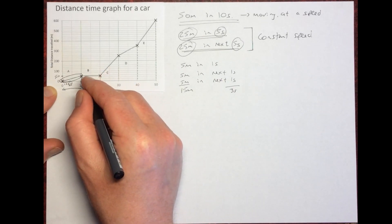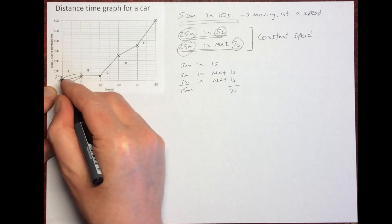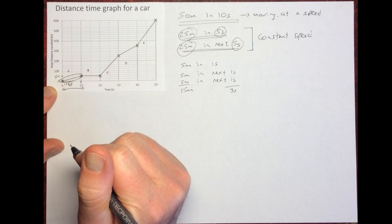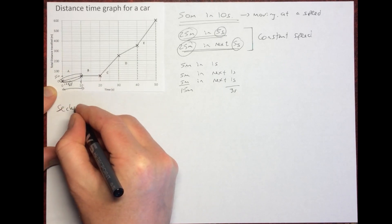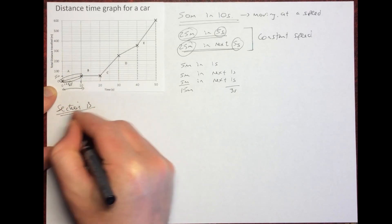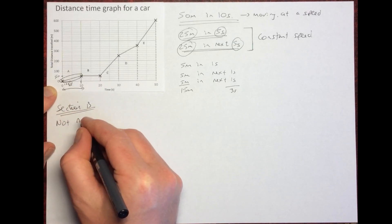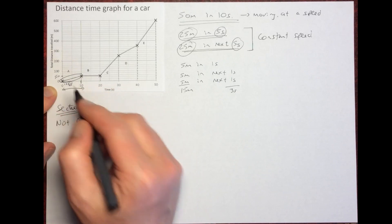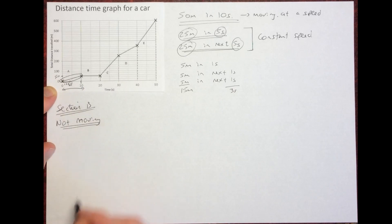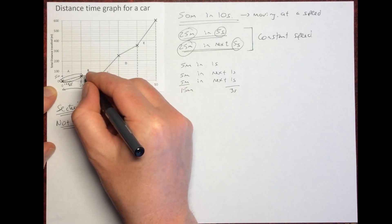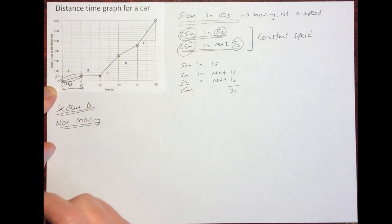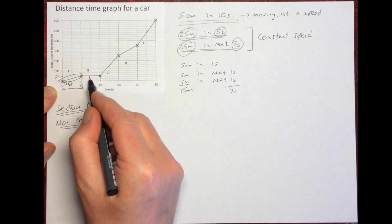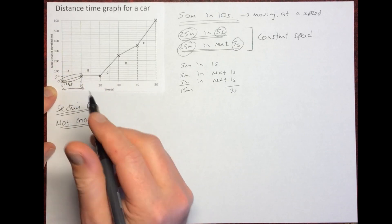Now looking at section B: after 10 seconds we've traveled 50 meters, and after 20 seconds we've still only traveled 50 meters. We're not moving at all — we're at the same position at the start as at the end. We know this because the line is flat — a horizontal line tells us we are not moving.